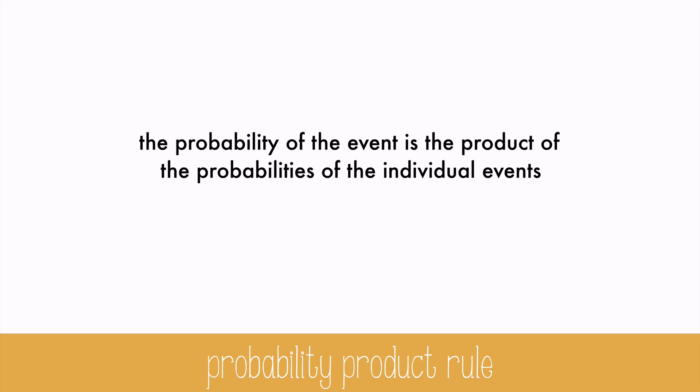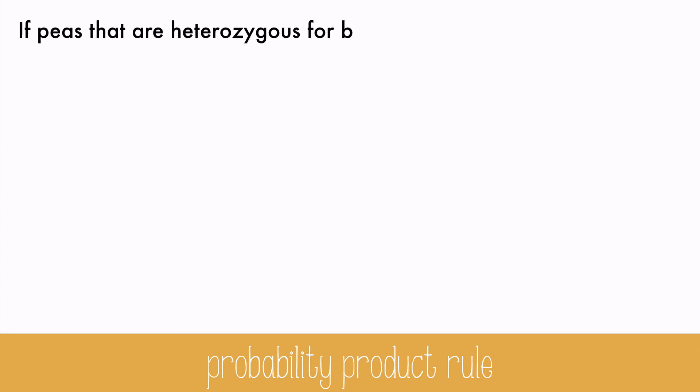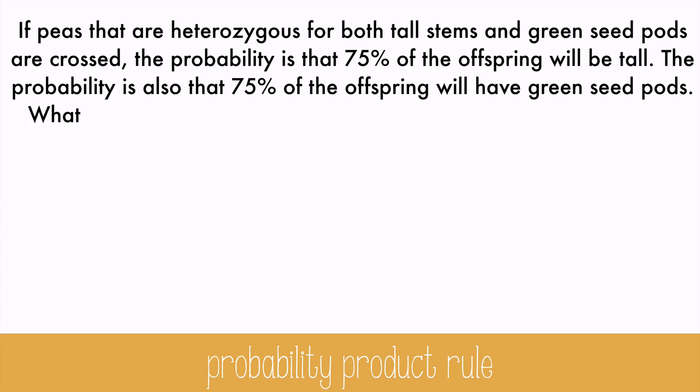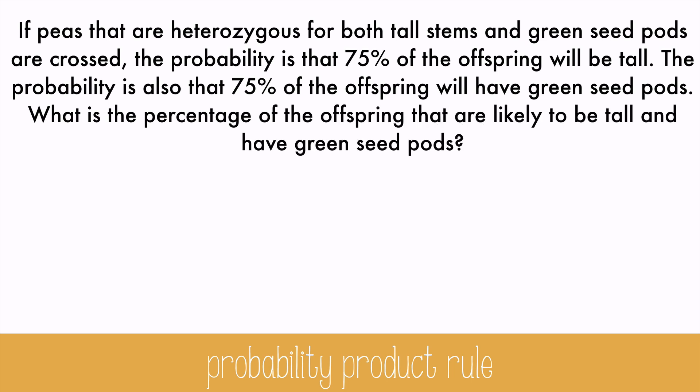While dihybrid crosses are great, there's a shortcut to finding the probabilities of certain combinations of traits: the probability product rule. You just take the product of the probabilities of an individual event. If peas that are heterozygous for both tall stems and green seed pods are crossed, the probability is that 75% of the offspring will be tall and 75% will have green seed pods. To find the percentage likely to be tall and have green seed pods, turn the percentages into decimals and multiply them together. This gives us 0.5625, which is 56.25%.